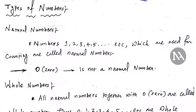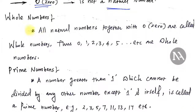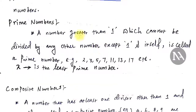The important part is the types of numbers. First, natural numbers: the numbers which are used for counting purposes. We always start counting from 1 onwards, not from 0, so 0 is not a natural number. These numbers 1, 2, 3, and so on are called natural numbers. Next, whole numbers: if you include 0 with your natural numbers, then those numbers are called whole numbers.